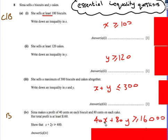So let's make everything into cents. So 40 times X is how much she's going to make on the biscuits. 80 times Y is how much she's going to make on the cakes. At least $160, so it must be greater than or equal to, and I've just converted $160 into cents by times by 100. So that is my inequality.